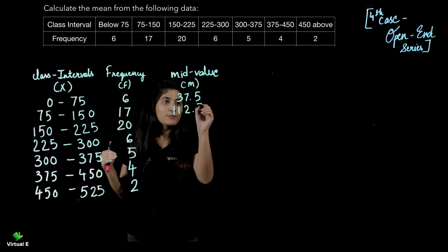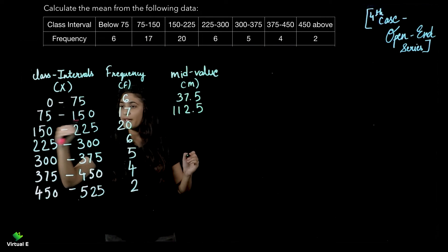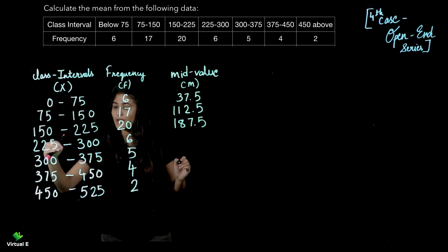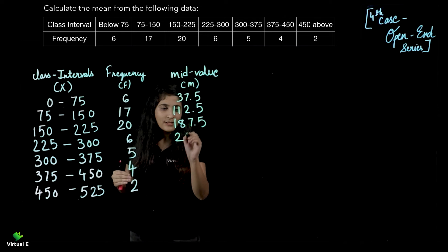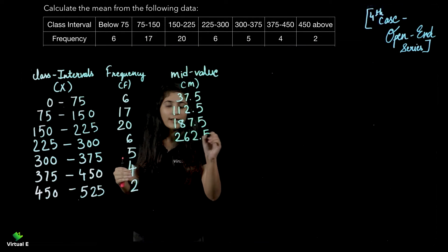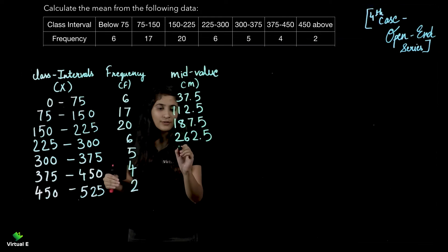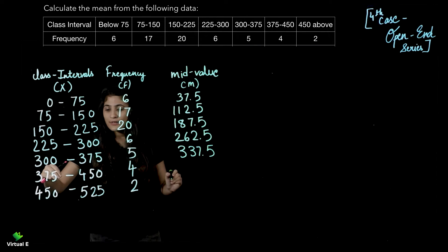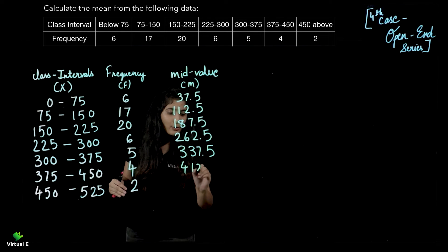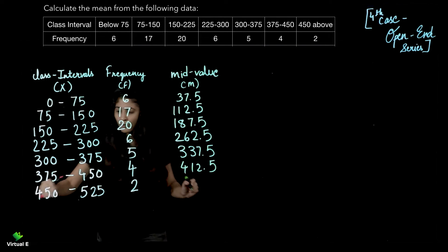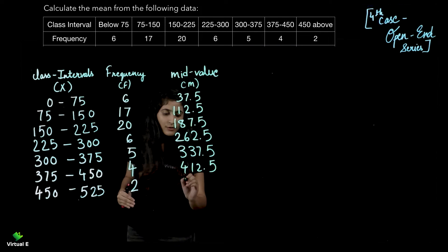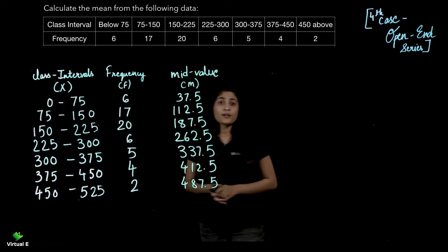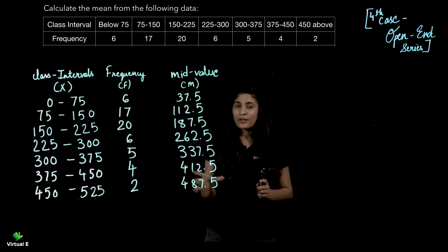75 to 150, you'll get 112.5. 150 and 225 will give you 187.5. 225 और 300 के बीच में आपको मिल जाएगी value, that is 262.5. 300 and 375 will give you 337.5. 375 and 450 will give you 412.5. And 450 and 525 will give you 487.5. Now you're done with the calculation of mid-value, that is M.